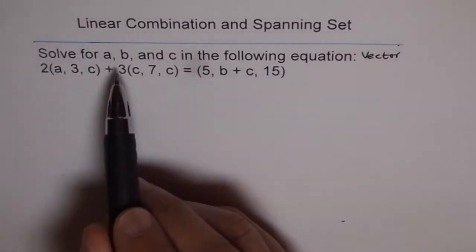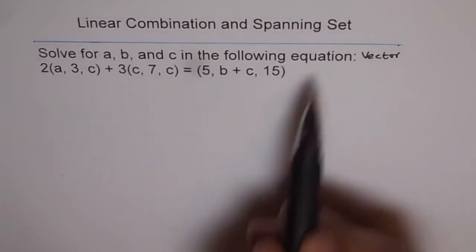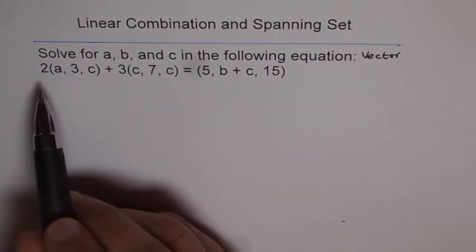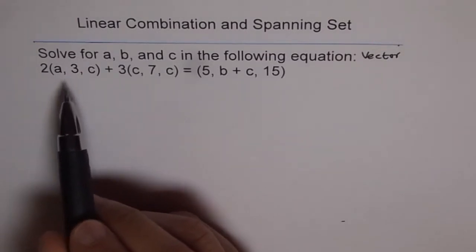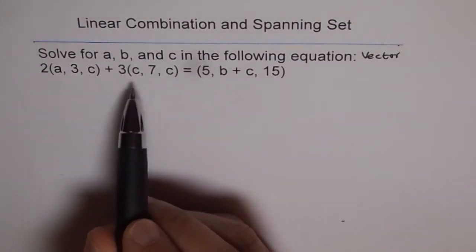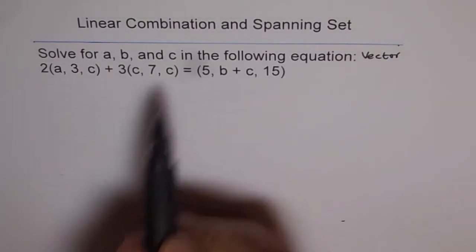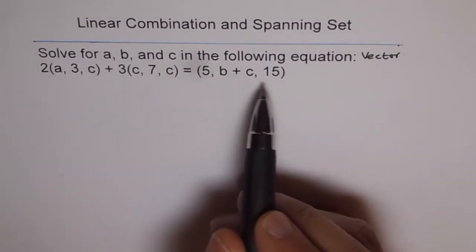Solve for a, b, and c in the following equation. This is a vector equation. It says 2 times a3c plus 3 times c7c equals 5, b plus c, 15.